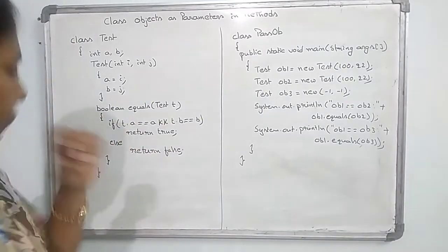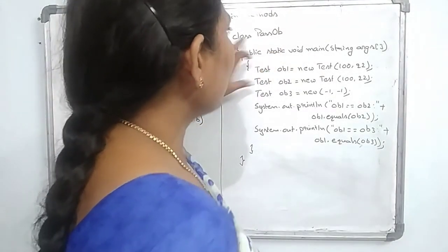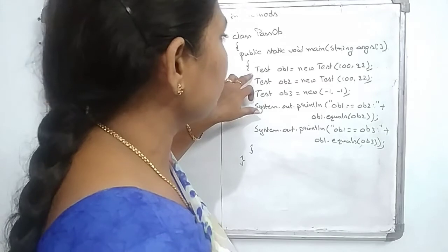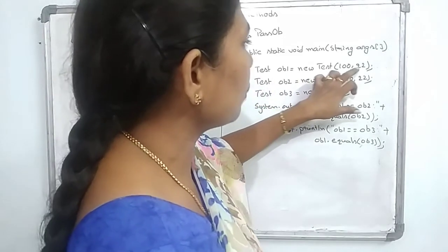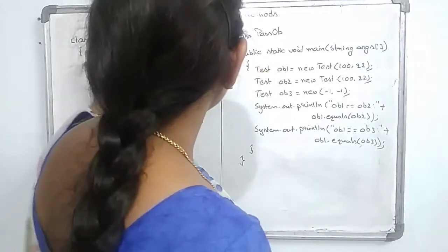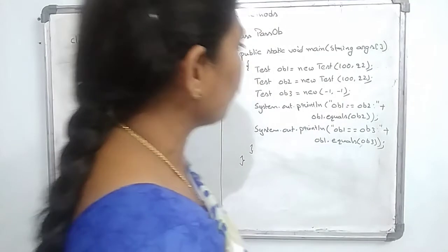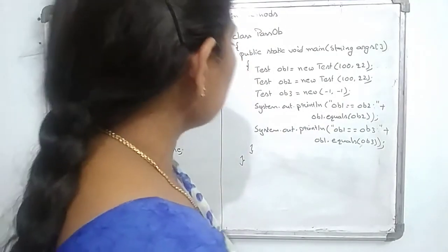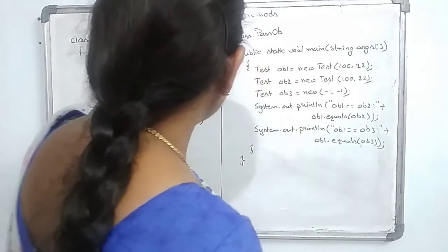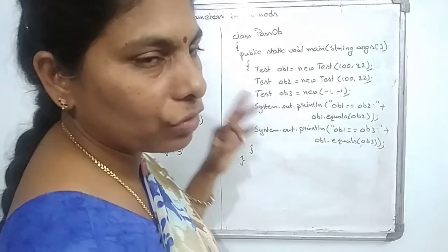Now I am writing the main class, PassObjects. In the main method, I am creating three objects of class Test: OB1 = new Test(100, 22), OB2 = new Test with another set of values, and OB3 = new Test(-1, -1). So I am creating three objects of the class Test.